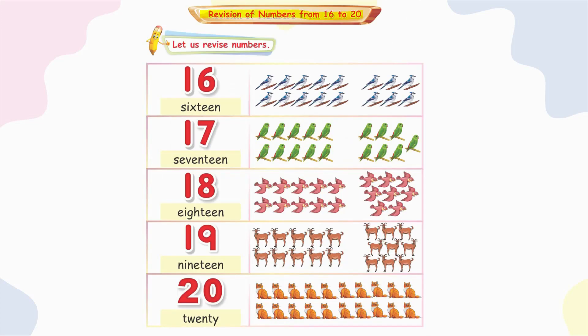Let's revise 16. One ten and six ones make 16. S-I-X-T-E-E-N, sixteen. Here are 16 birds.